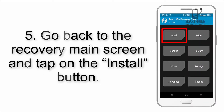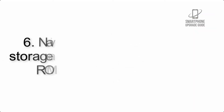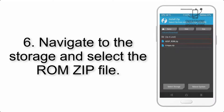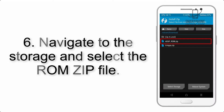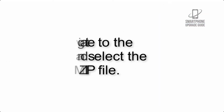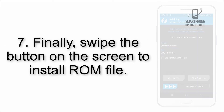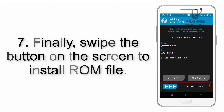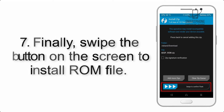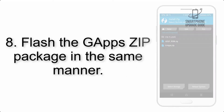Step 5: Go back to the recovery main screen and tap on the Install button. Step 6: Navigate to the storage and select the ROM zip file. Step 7: Finally, swipe the button on the screen to install the ROM file.